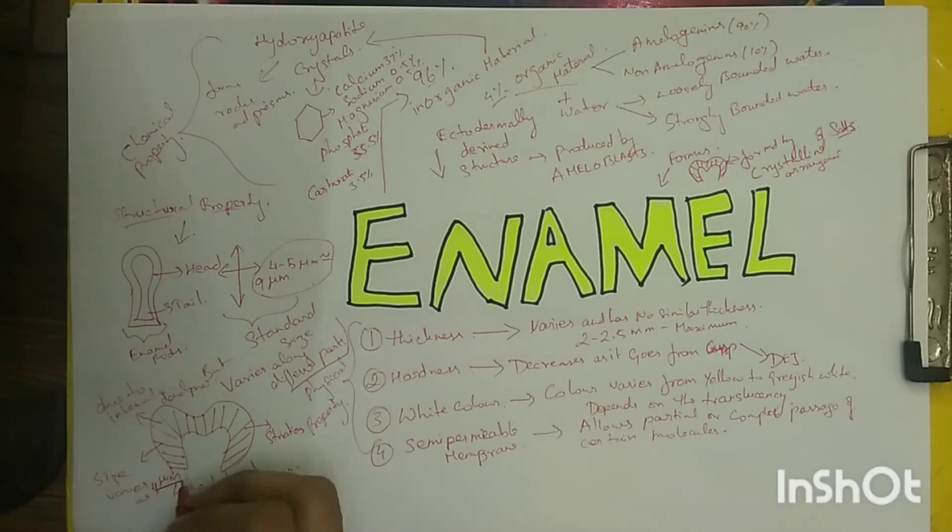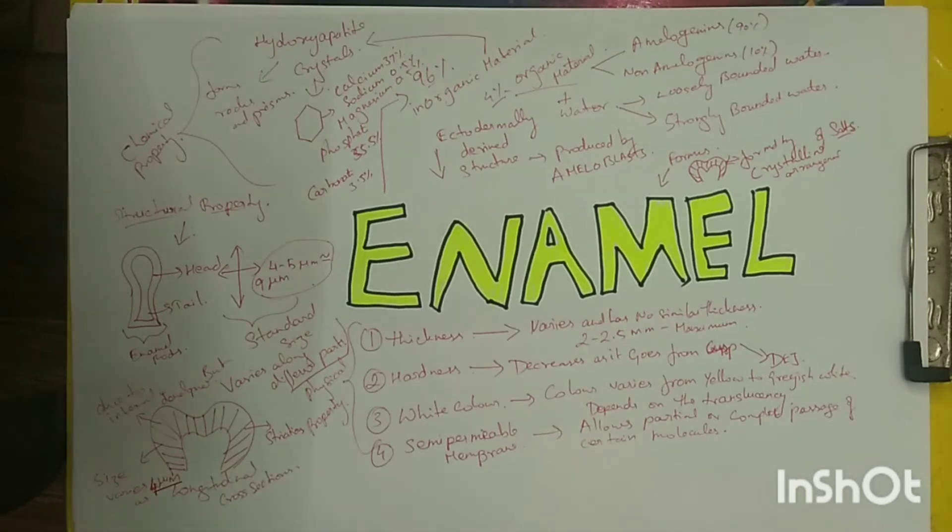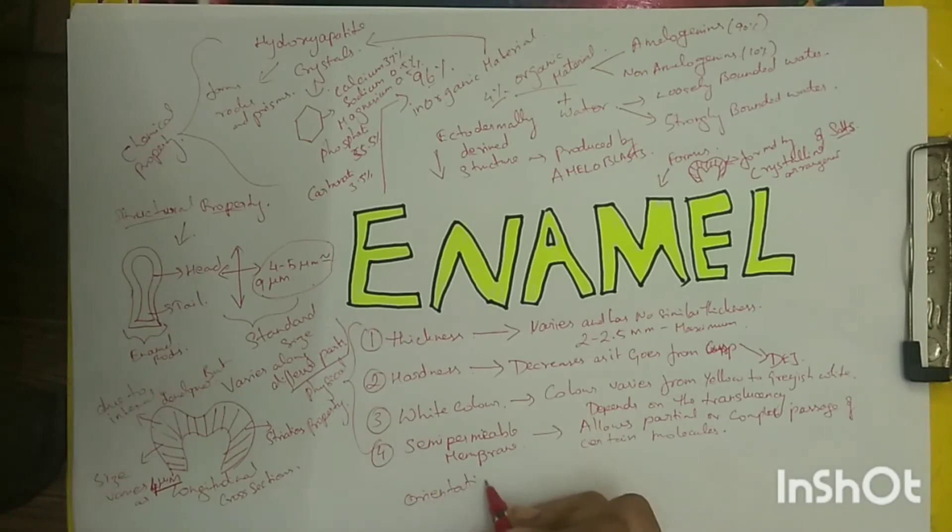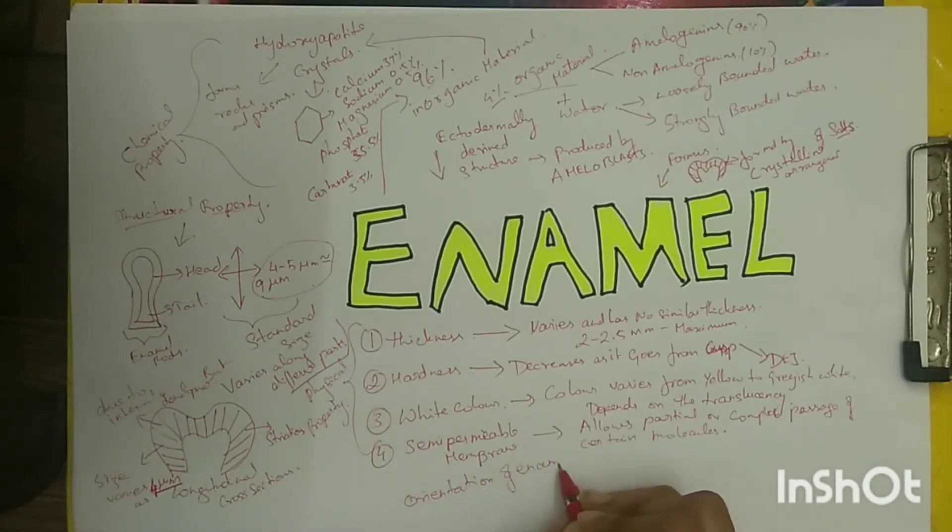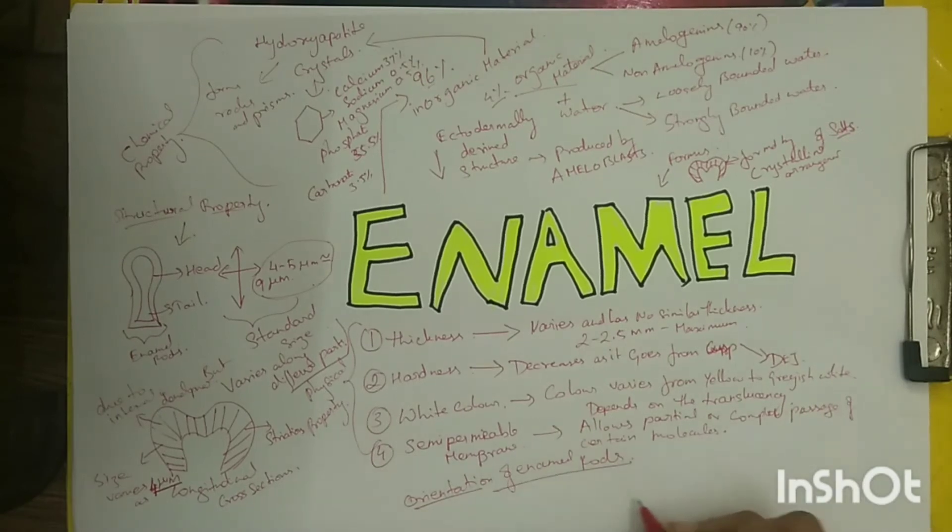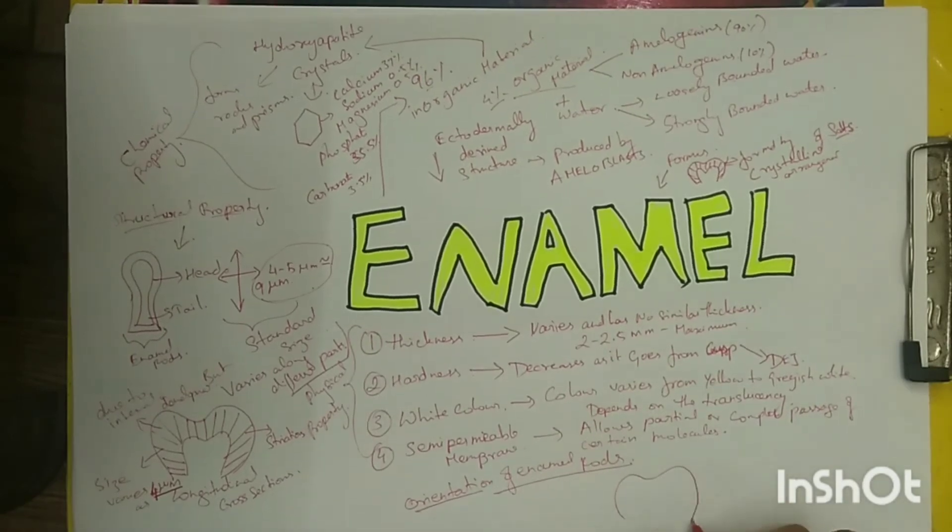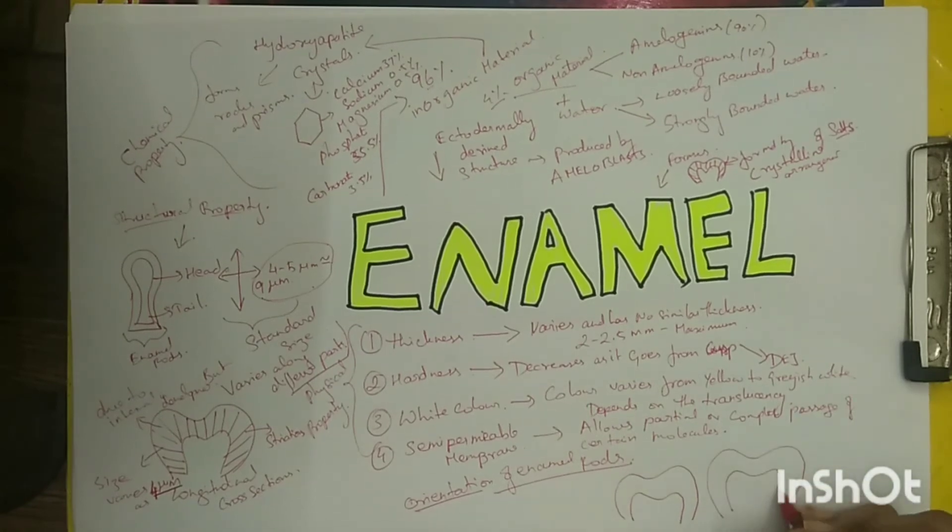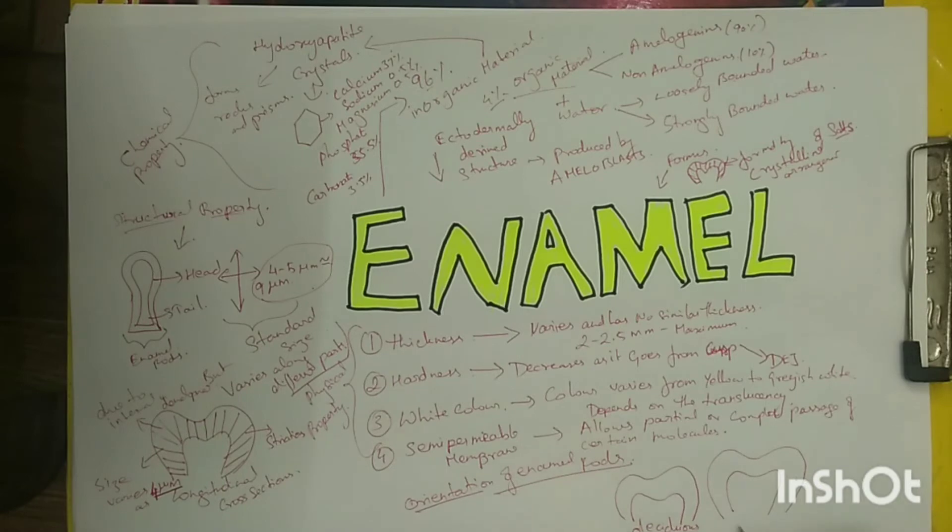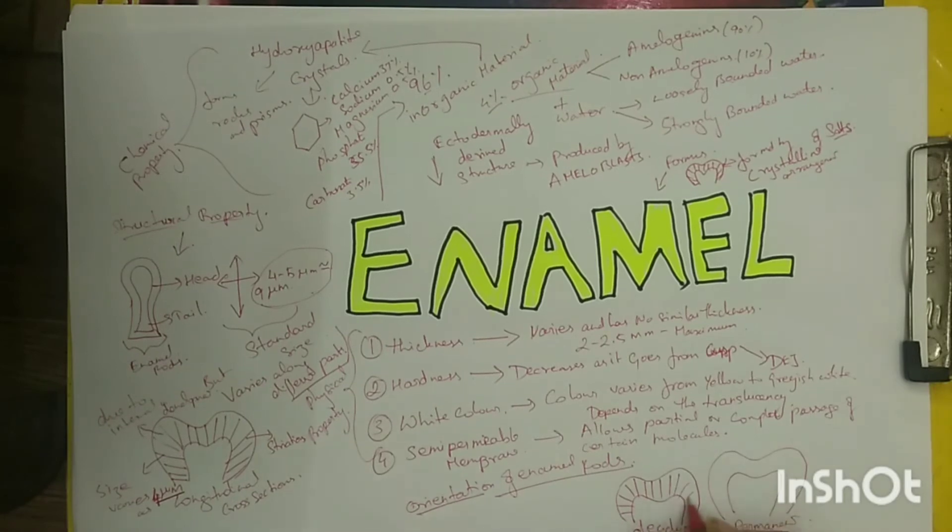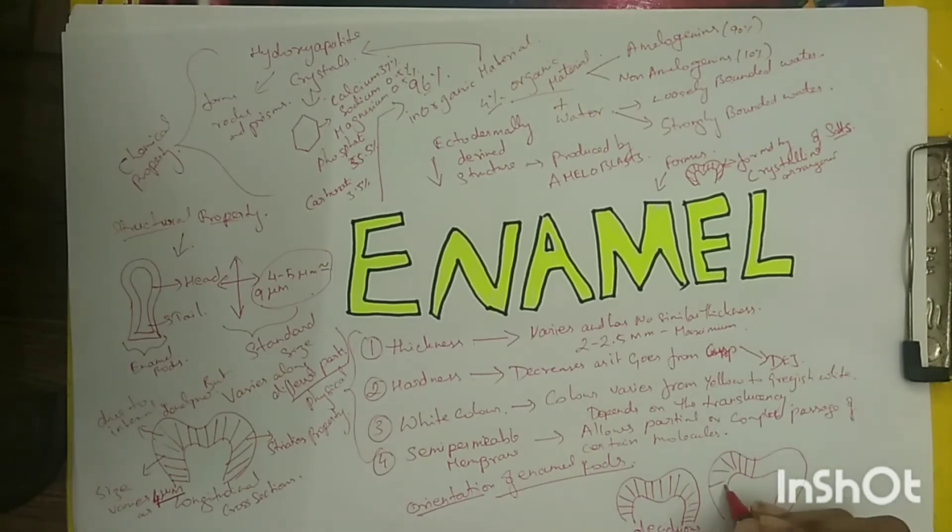Orientation of enamel rods: the general orientation of enamel rods is perpendicular to the dentin surface. In deciduous teeth, the enamel rods lie in a horizontal plane in the cervical and middle third. They gradually become more oblique in the incisal and occlusal third and are almost vertical in the incisal edge or the cusp tip.